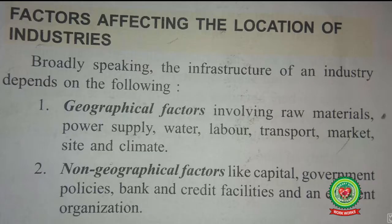Now let's start with the reading about the factors affecting the location of industries. Broadly speaking, the infrastructure of an industry depends on the following: first, the geographical factor involving raw material, power supply, water, labor, transport, market, site and climate. Today we are going to read all the geographical factors in detail.